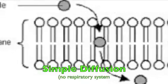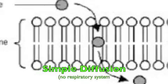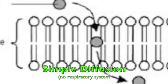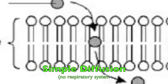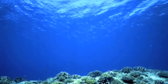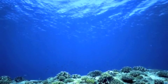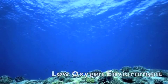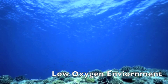They obtain and transport oxygen to all cells through simple diffusion. When oxygen is allowed to pass through their membrane, it allows them to live in a low oxygen environment.